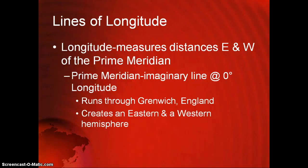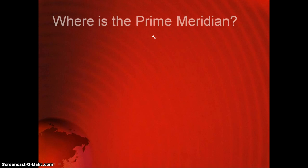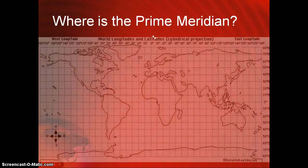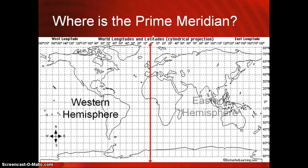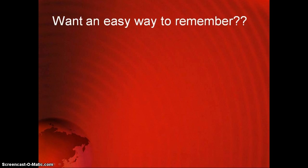Turn back to the map and locate the prime meridian. If this is what you put down for the prime meridian, you are correct — it creates a western hemisphere and an eastern hemisphere. An easy way to remember latitude versus longitude is: longitude is long, and latitude — flatitude.